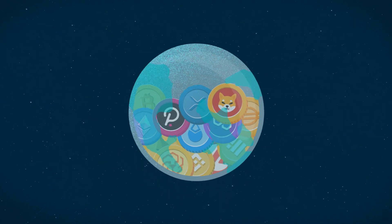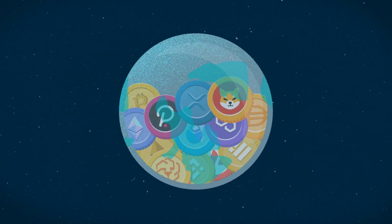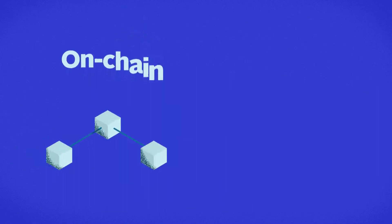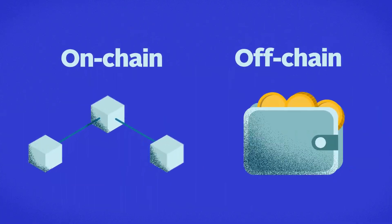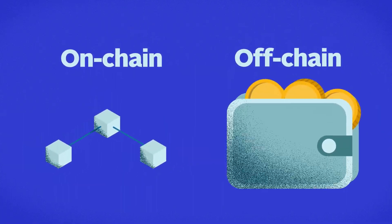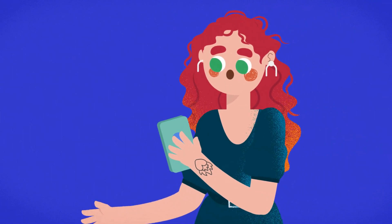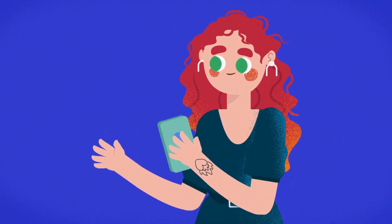In the world of cryptocurrency, there are two main types of transactions: on-chain and off-chain. But what exactly is the difference between them? Keep watching to learn more about on-chain versus off-chain transactions.